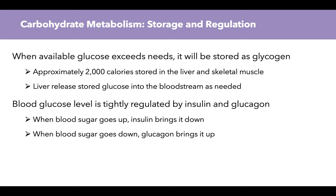Our body wants to ensure we have enough glucose and some storage available. When available glucose exceeds the body's needs, it's stored as glycogen, and we can store approximately 2,000 calories in our liver and skeletal muscle as glycogen. The liver can break down glycogen into glucose and release it into the bloodstream as needed. However, we cannot tap into skeletal muscle glycogen to raise blood glucose — that skeletal muscle glycogen is reserved for the skeletal muscle and used during exercise.